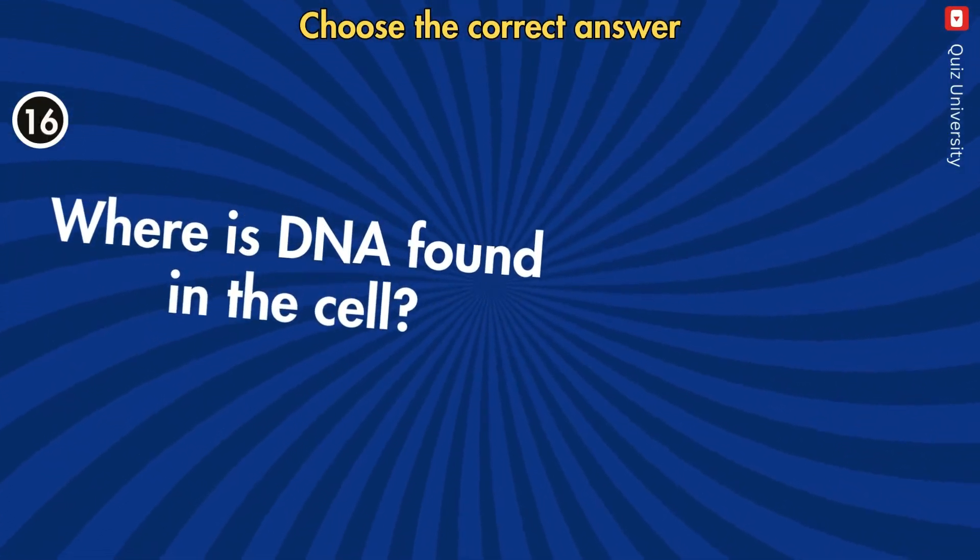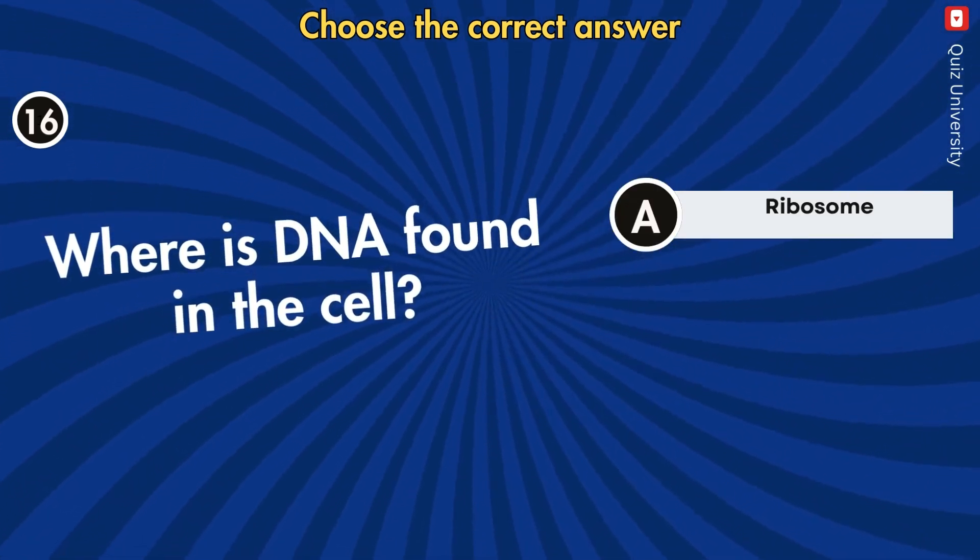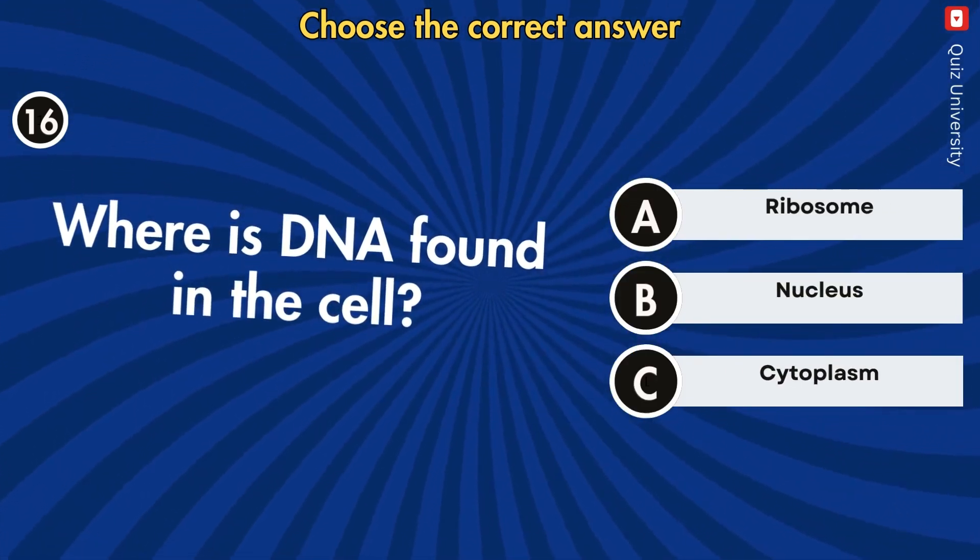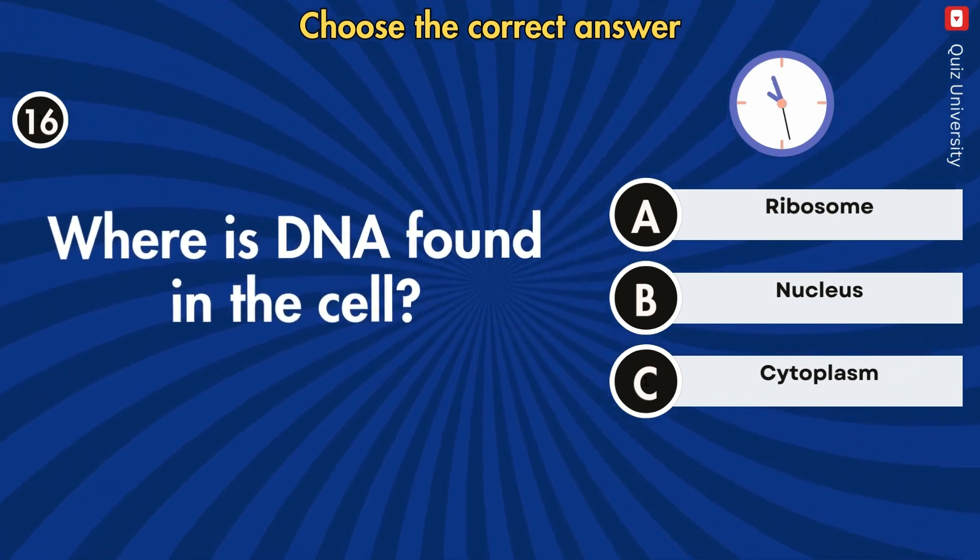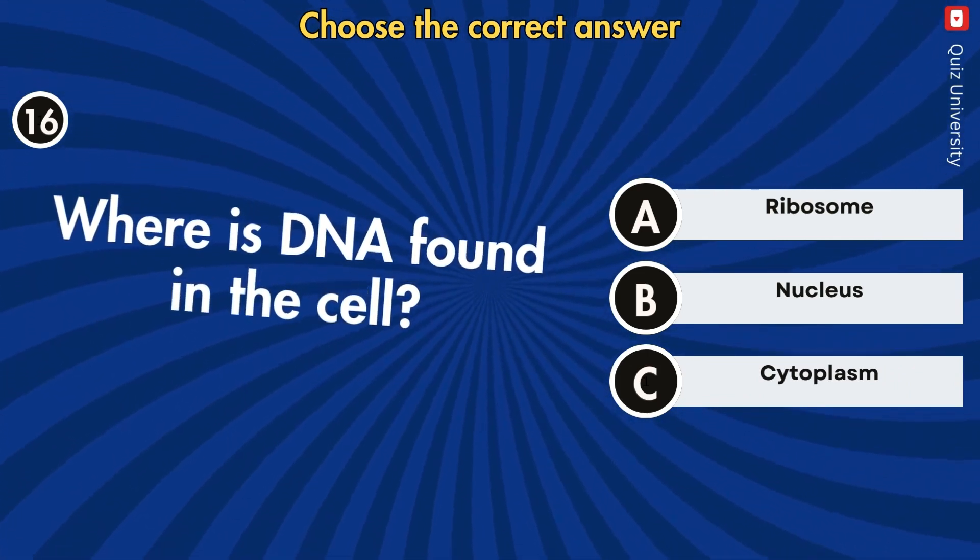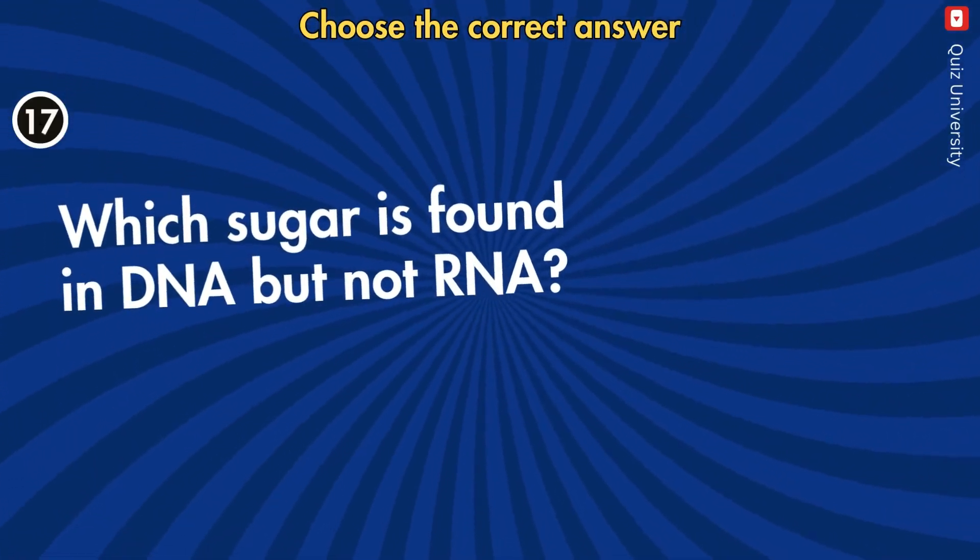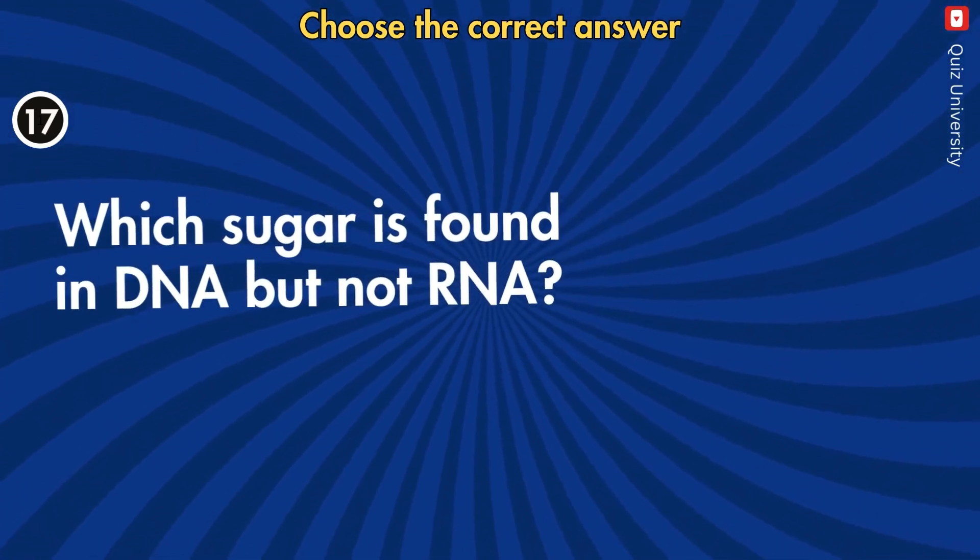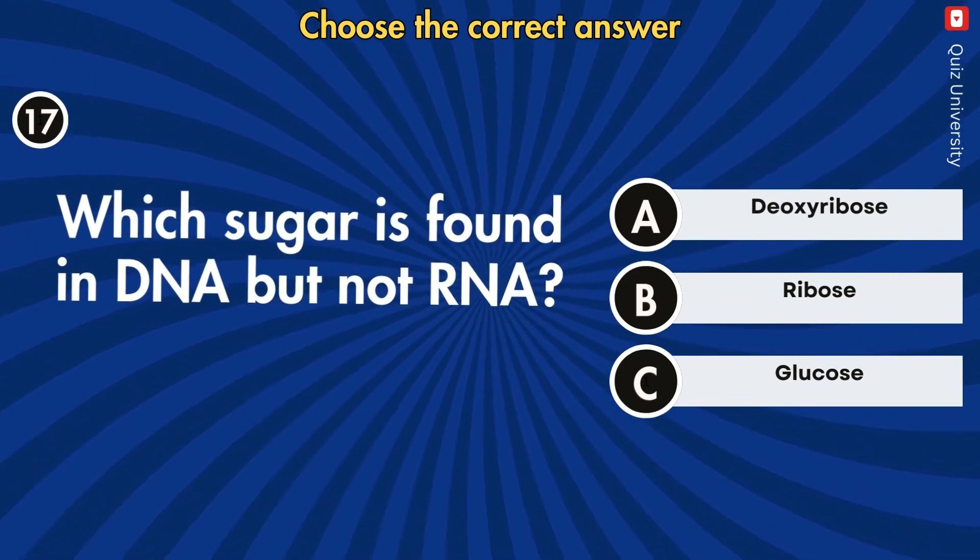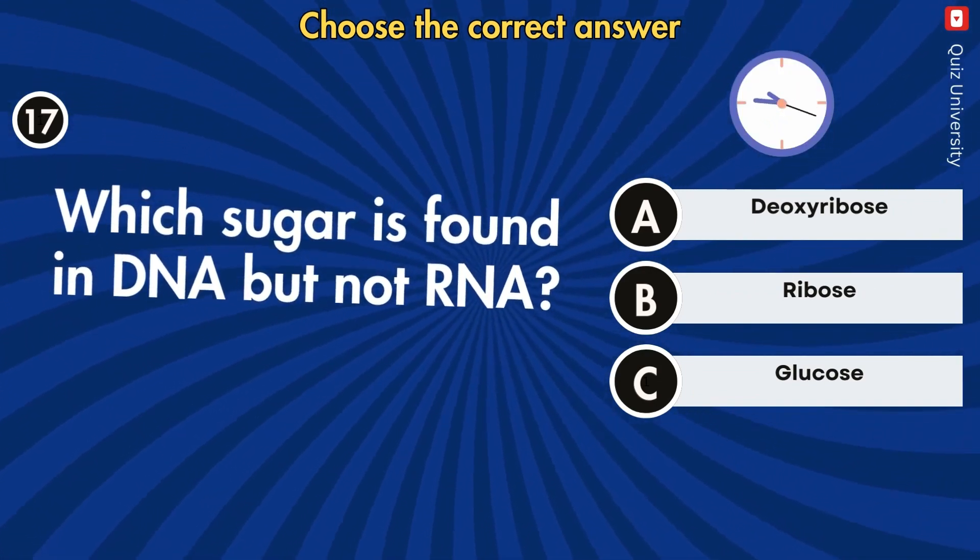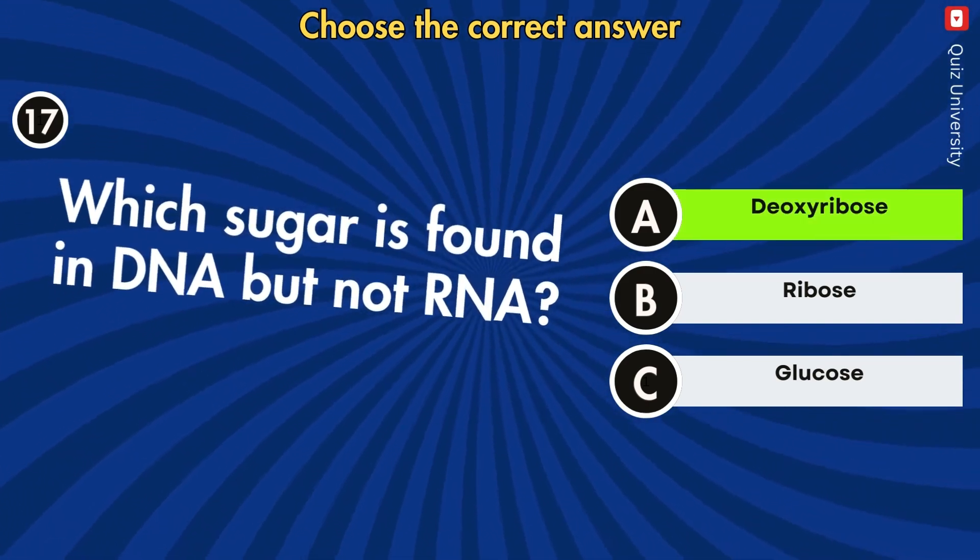Where is DNA found in the cell? Which sugar is found in DNA but not RNA?